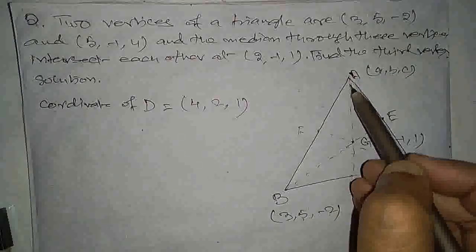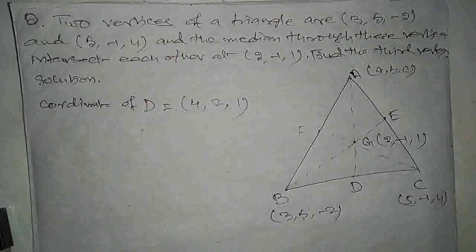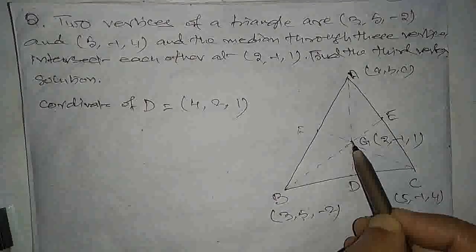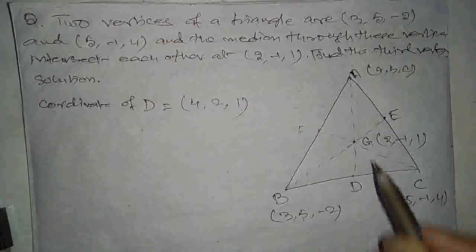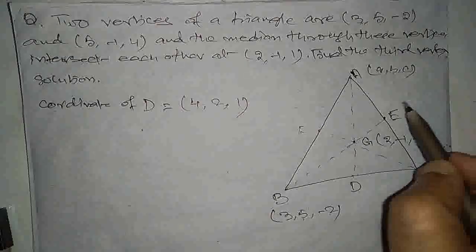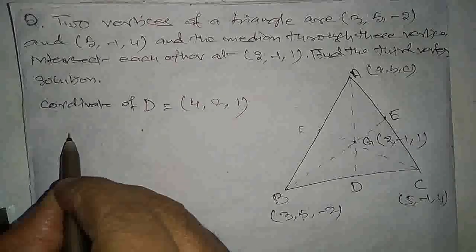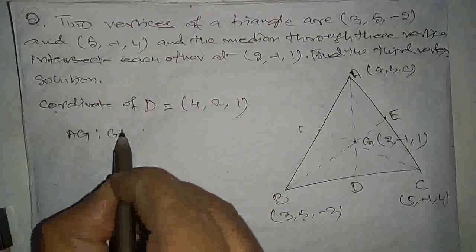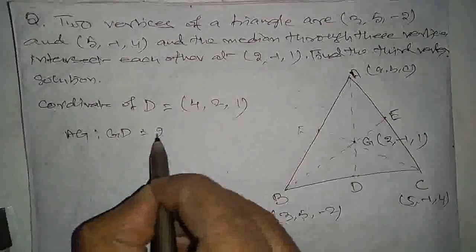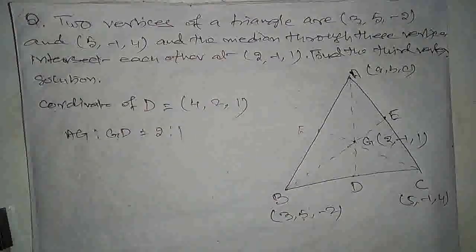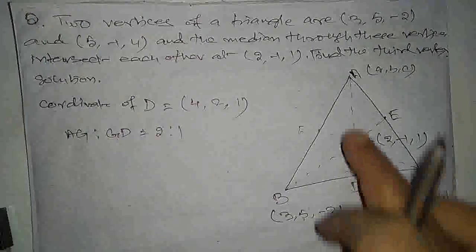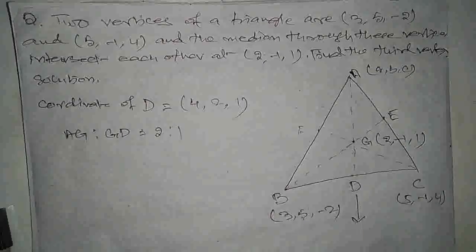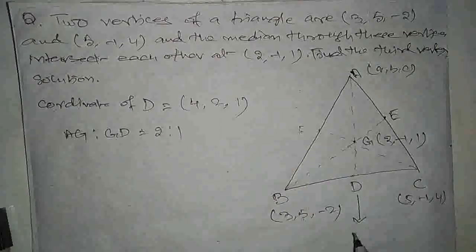हम जानते हैं कि median को centroid 2:1 के ratio में काटता है, यानि AG:GD = 2:1 होगा। तो D का coordinate हमें मिल गया: (4, 2, 1)।